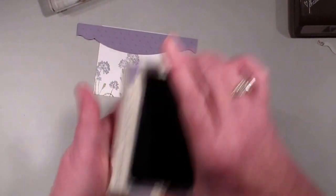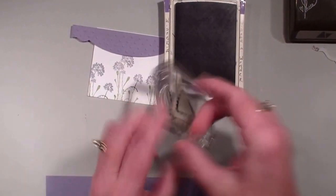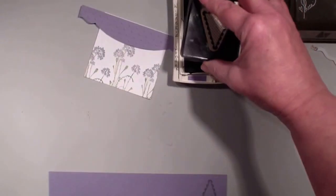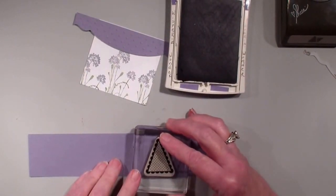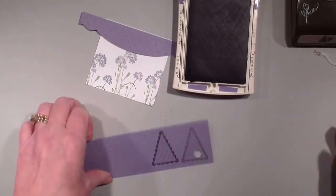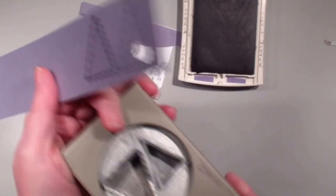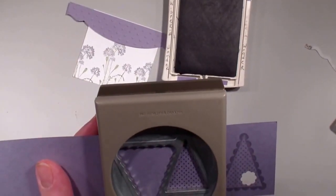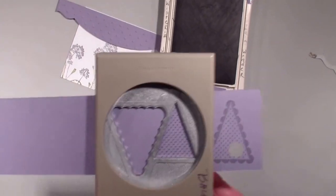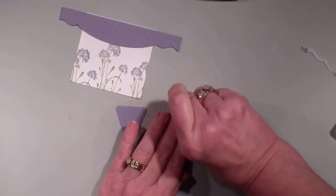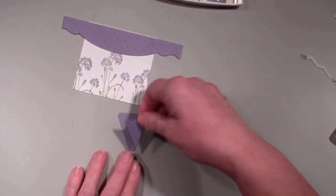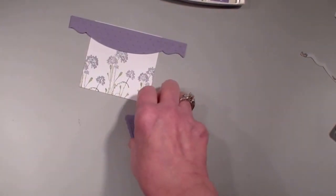Next, what I have done is I've taken a scrap piece of the wisteria wonder cardstock and brought in my perfect pennant punch and pennant parade stamp set. So I have stamped that image, going to bring in my punch, line it up like so. And if you don't get the very tip of that scallop, it is fine because we're actually going to cover that up by layering the triangle onto the scallop.